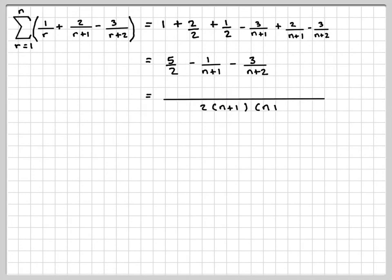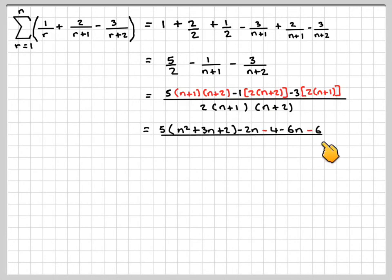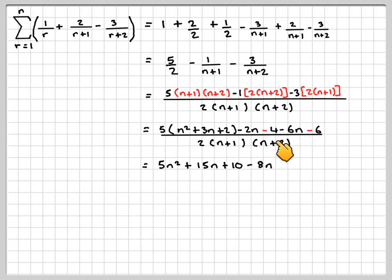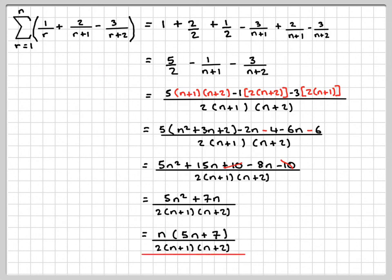You might be asked to write it with a common denominator. The 5/2 multiplied by (n+1)(n+2), minus 1 times 2(n+2), minus 3 times 2(n+1). Multiplying out: 5n²+15n+10, minus 2n-4, minus 6n-6, all over 2(n+1)(n+2). The tens cancel, leaving 5n²+7n, since 15-8=7, divided by 2(n+1)(n+2). A common factor of n gives us the final sum n(5n+7) / [2(n+1)(n+2)].